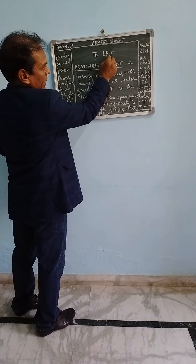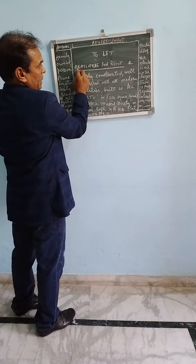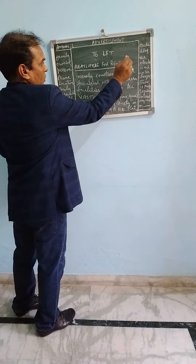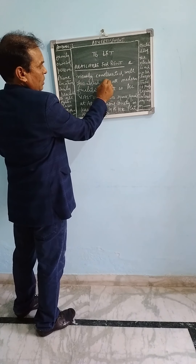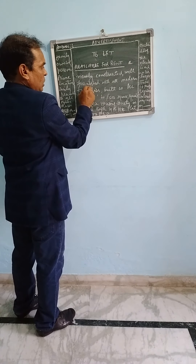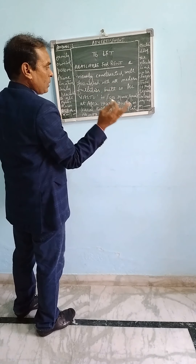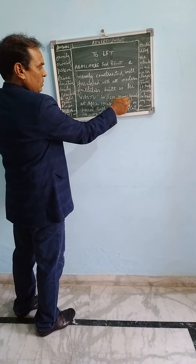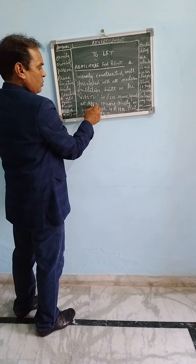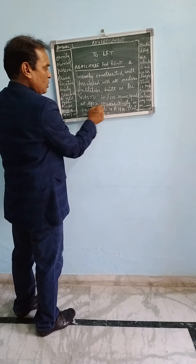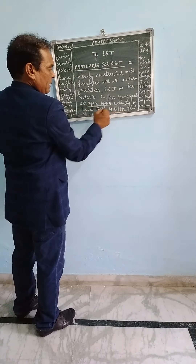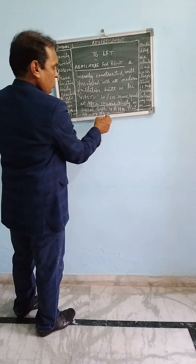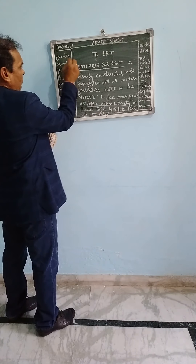Dear students, you will have to write the name of the column first of all: 'To Let,' then 'Available for Rent' — these three words should be written in capital letters. Then: newly constructed, well furnished, with all modern facilities. You can include other important features of the flat also, such as built as per Vastu, in so and so square yards, at so and so colony or housing society. You can mention the name of the area, the size of the flat, and the number of the flat.